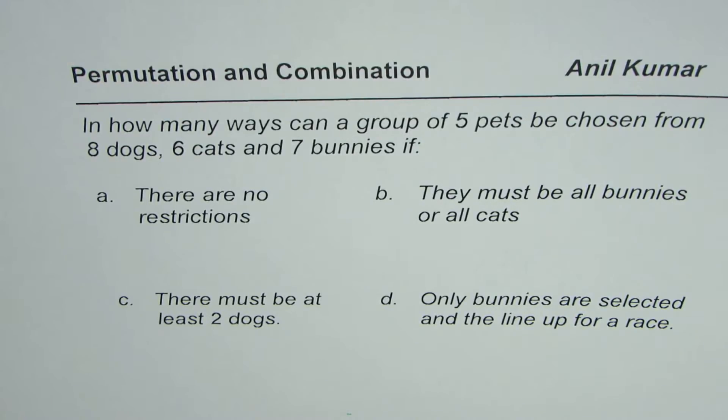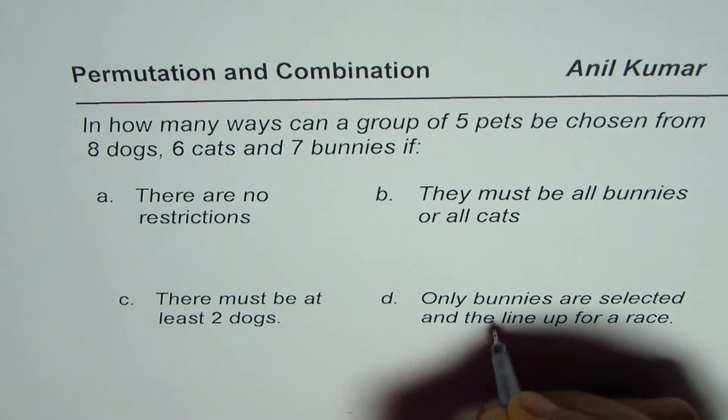if there are no restrictions, part b is they must all be bunnies or all cats, part c is there must be at least 2 dogs and part d is only bunnies are selected and they line up for a race.